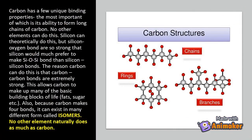Carbon has a few unique bonding properties, the most important of which is its ability to form long chains of carbon. No other element can do this. Silicon can theoretically do this, but silicon-oxygen bonds are so strong that silicon would much prefer to make silicon-oxygen-silicon bonds than silicon-silicon bonds. The reason carbon can do this is that carbon-to-carbon bonds are extremely strong, allowing carbon to make up many of the basic building blocks of life. Also, because carbon makes four bonds, it can exist in many different forms called isomers. No other element naturally does as much as carbon.